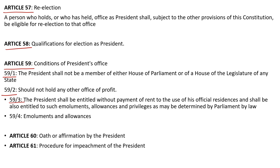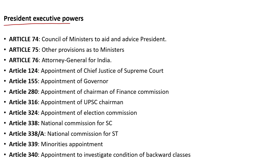The official residences of the president are Rashtrapati Bhavan, the Retreat in Shimla, and Rashtrapati Nilayam in Hyderabad. Article 59(4) covers presidential allowances. Article 60 covers the oath or affirmation of the president. Article 61 covers the impeachment procedure. Article 74 covers the president's council of ministers' advice. Article 75 covers the appointment of the Prime Minister. The president also appoints the Attorney General of India, Chief Justice of the Supreme Court, Governor, Chairman of Finance Commission, UPSC Chairman, Election Commission, National Commission for SC/ST and minorities, and the commission to investigate conditions of backward classes.